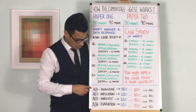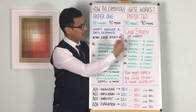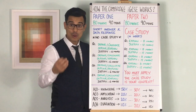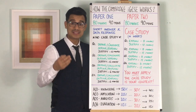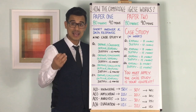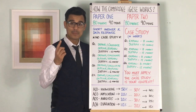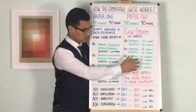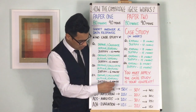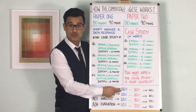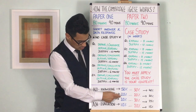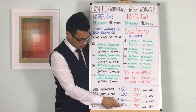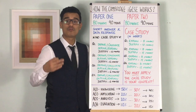For both Paper 1 and Paper 2 there are assessment objectives — AOs — and there are four: AO1 is knowledge, AO2 is application, AO3 is analysis, and AO4 is evaluation. Look at how they are weighted differently for each paper. For Paper 1, 50% of the marks come from knowledge, 20% from application, 20% from analysis, and the remaining 10% from evaluation — so it's a really knowledge-based paper.